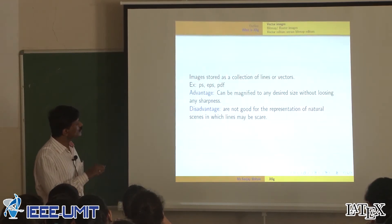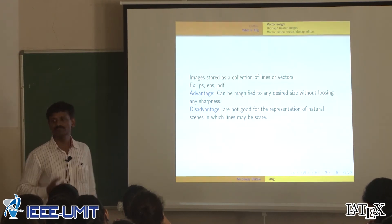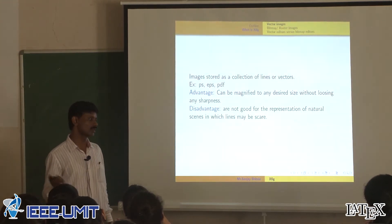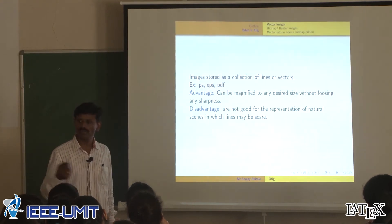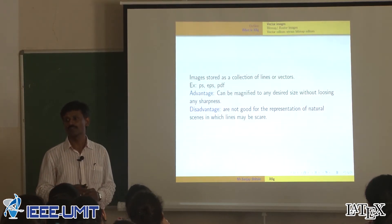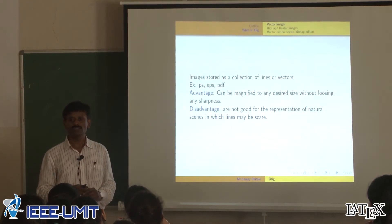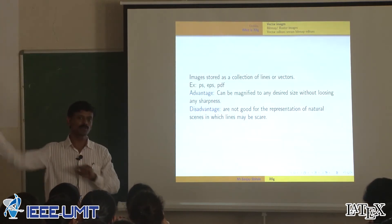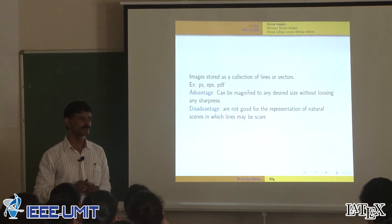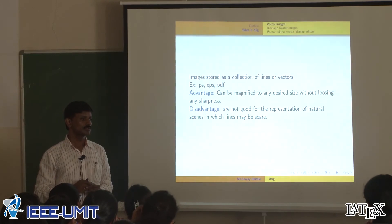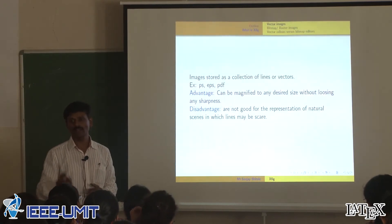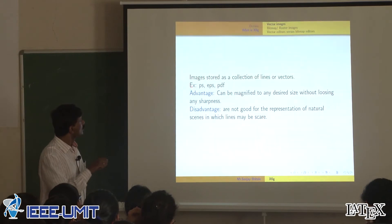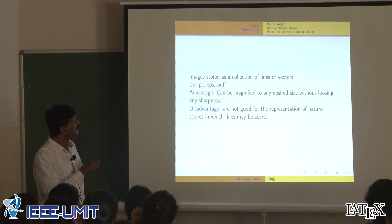Images stored as a collection of lines or vectors — lines and vectors you are well acquainted with. Engineering students know what vectors are: you can store something in a mathematical way, x equal to some numbers in a square bracket — that is a vector. So, vector graphics examples are PostScript, EPS, or PDF.